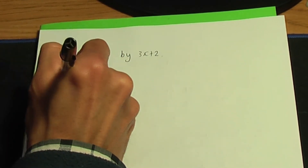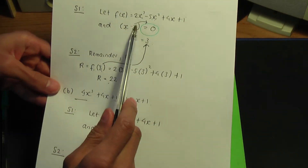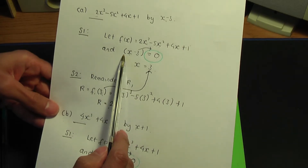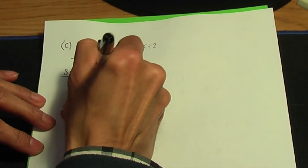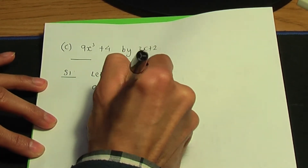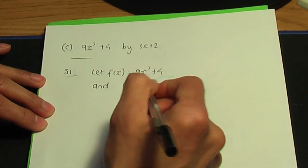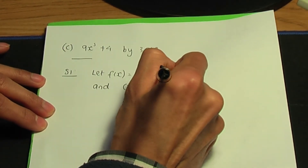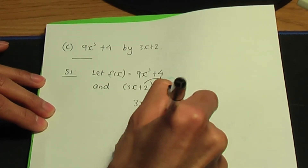Back to the paper and pen. Let's apply the remainder theorem. In step number 1, f(x) is your polynomial, and you equate your linear to 0 always. So we let f(x) equal 9x cubed plus 4, and we take the linear, which is 3x plus 2, and equate that to 0. So rearranging, 3x equals minus 2, and therefore x equals minus 2 over 3.